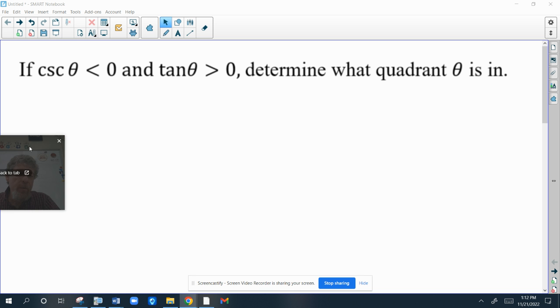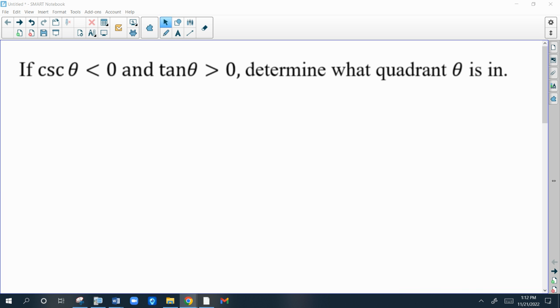We're going to determine what quadrant theta is in given these two pieces of information. Cosecant theta is less than zero, which means it's negative, and tangent theta is greater than zero, which means it's positive.